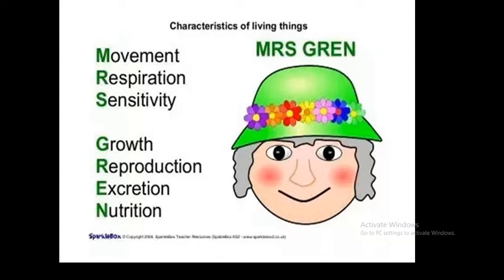The fourth characteristic is growth — a permanent increase in size and dry mass by an increase in cell number or size or both. Even bacteria and single-celled creatures show an increase in size. Multicellular organisms increase the number of cells in their body, become more complex, and change their shape as well as increasing in size.